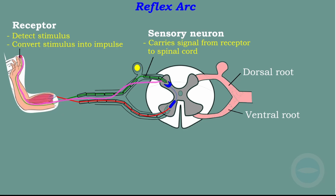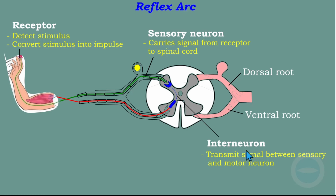The next neuron is the interneuron. The interneuron is inside the spinal cord, and its function is to connect the sensory neuron and the motor neuron. The interneuron transmits signals between the sensory and motor neuron. Another name for the interneuron is the connector neuron.